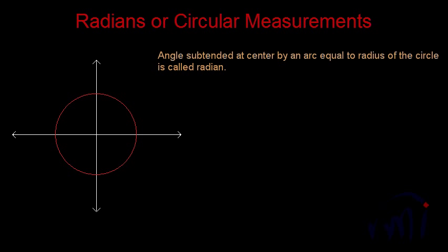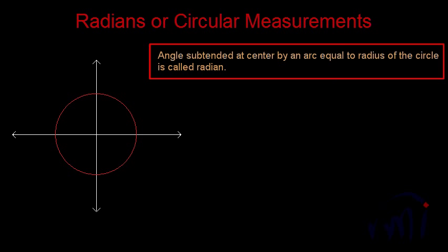Now let's talk about radians. What is a radian? Radian is also one way of measuring angle. But how does it work and what is it? To learn that, we are going to draw a circle. The radian is actually the angle subtended at the center by an arc equal to the radius of the circle.